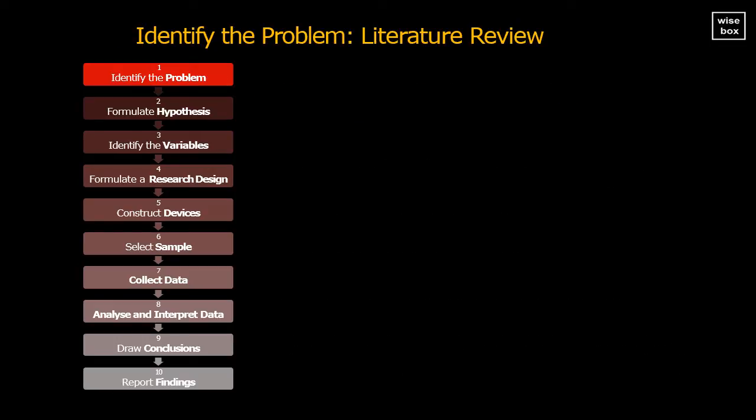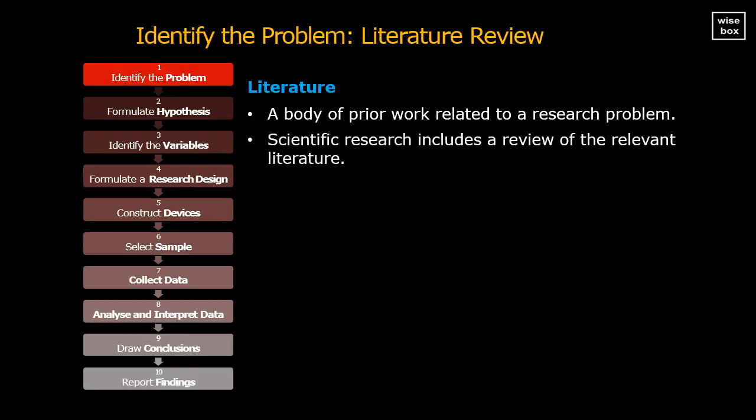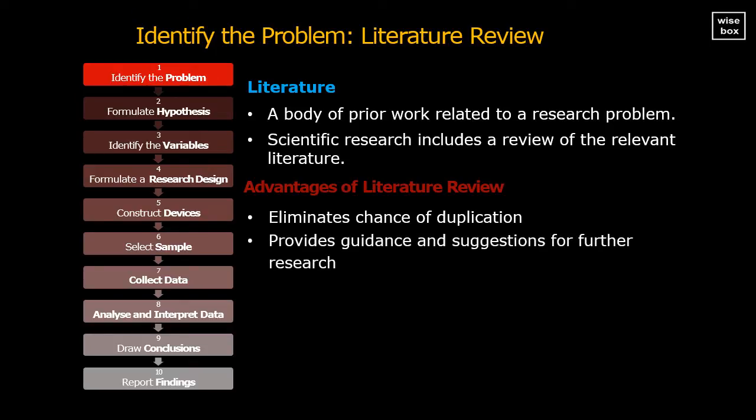After identifying and formulating the research problem, we then have to review some related literature. A literature is a body of prior work related to a research problem. Scientific research always includes a review of the relevant literature. Literature review eliminates any chance of duplication. The researcher gains knowledge about what has already been done. Also, it provides guidance and suggestions for further research. The researcher gains knowledge of gaps in current research. Literature review helps to identify a good solvable problem.